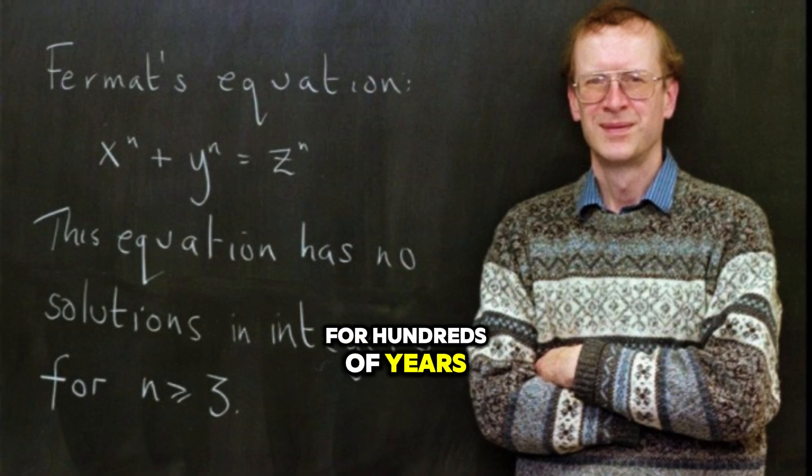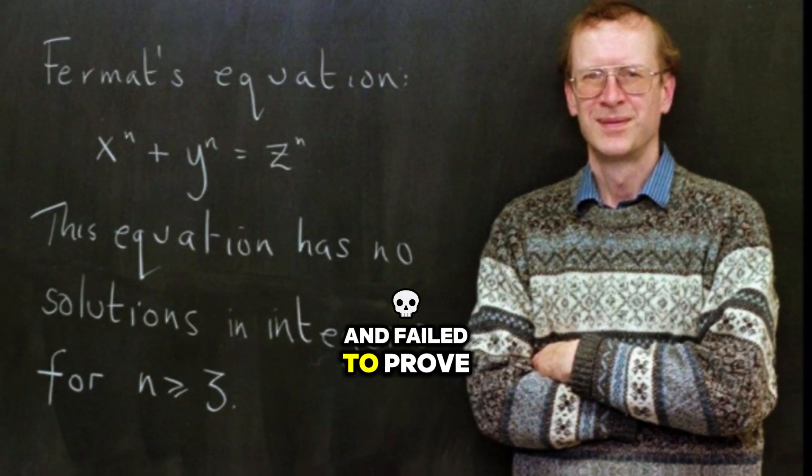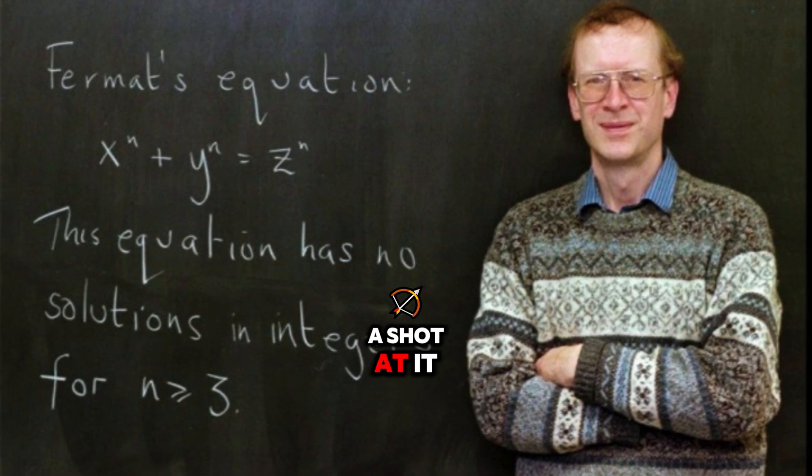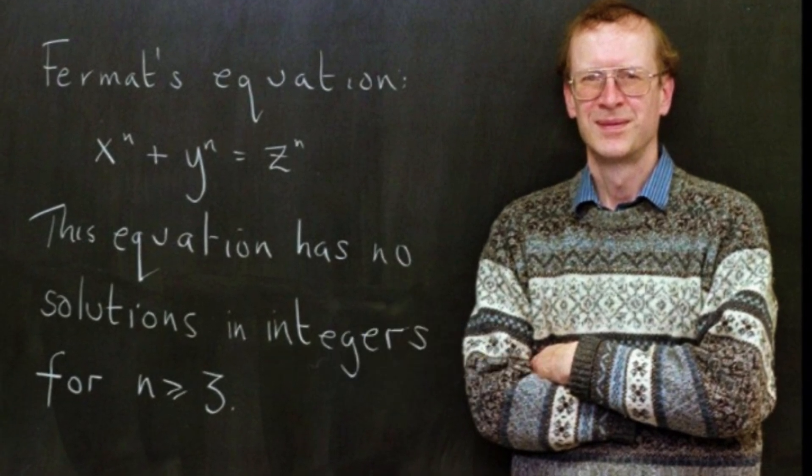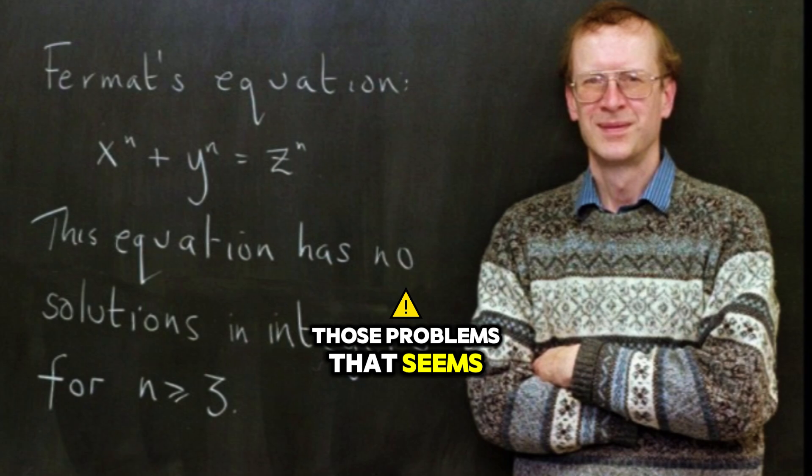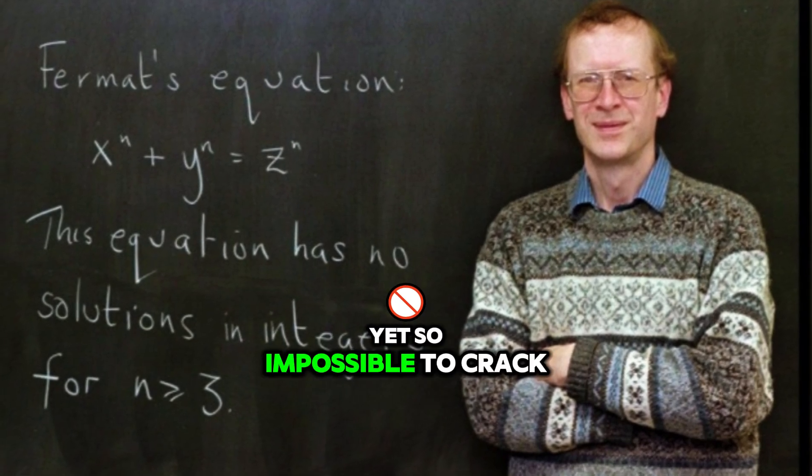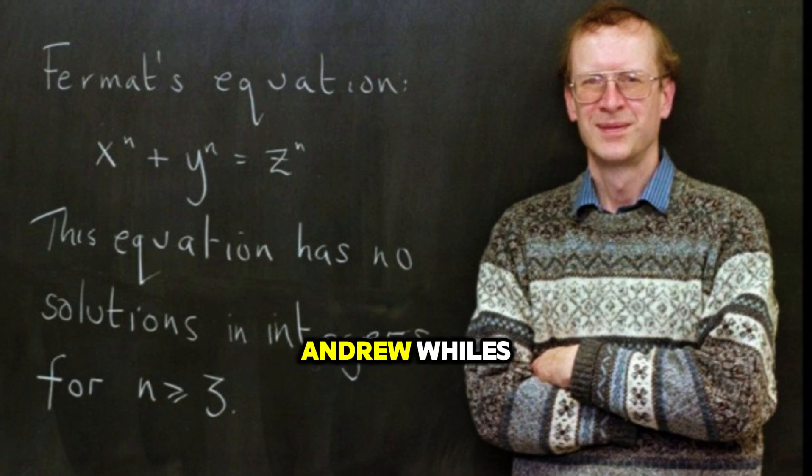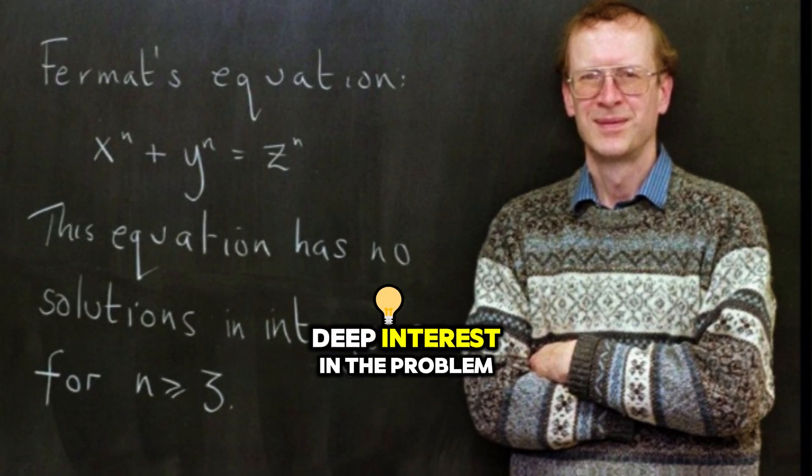For hundreds of years, mathematicians tried and failed to prove Fermat's Last Theorem. Many brilliant minds took a shot at it, but none of them succeeded. It became one of those problems that seemed so simple, yet so impossible to crack. But in the 1980s, a young mathematician named Andrew Wiles began to take a deep interest in the problem.